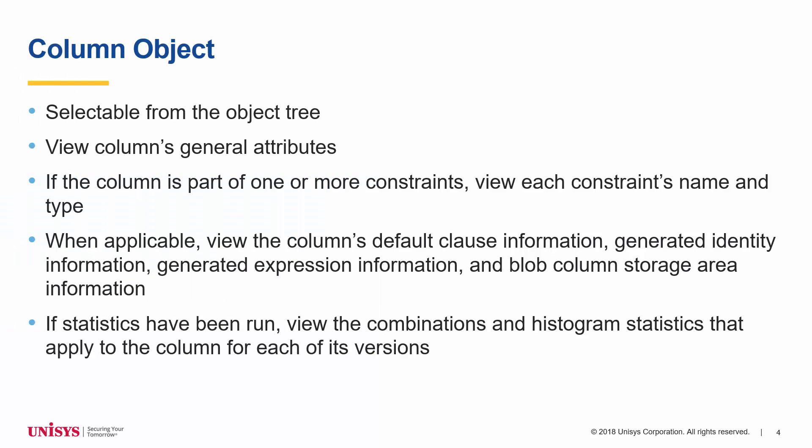On the UDS Object Explorer page, selecting a column object displays the column's information across one or two tabs in the object viewer. The first tab, General, displays general attributes, name and type of each constraint the column is a part of, default clause information, generated identity information, generated expression information, and blob column storage area information. The information is displayed when it is relevant to the column. The second tab, Statistics, is displayed when statistics have been run against the column and displays combinations and histogram statistics for each version of the column.